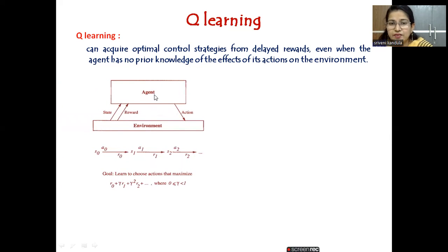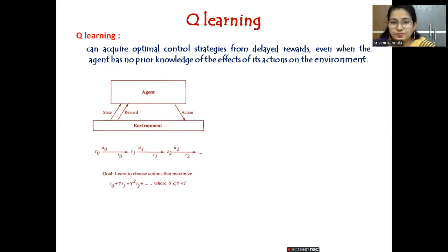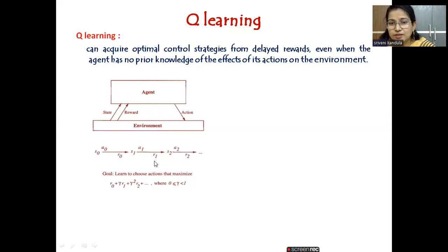The agent performs an action on the environment, and whenever he performs this action, he will receive a reward — which can be a positive one or a negative one. Stated mathematically, the agent is in state s₀, performing action a₀, and receives an immediate reward r₀. This action leads to a future state s₁, future action a₁, and a future reward r₁. Whenever he performs a particular action, he changes to another state and selects the next action and reward. The goal is to learn to choose actions which maximize rewards.